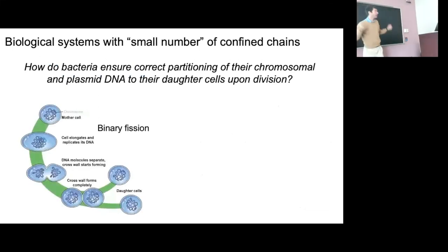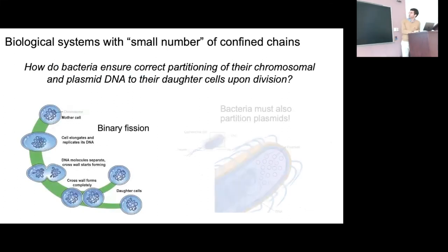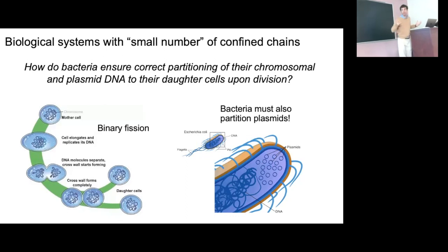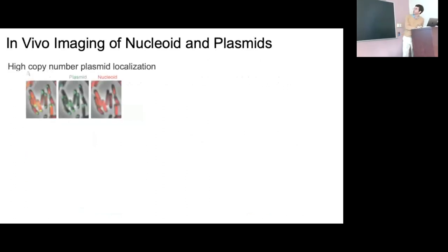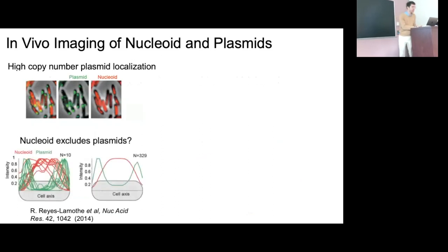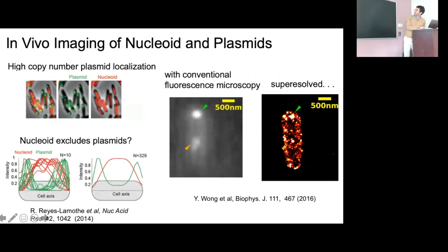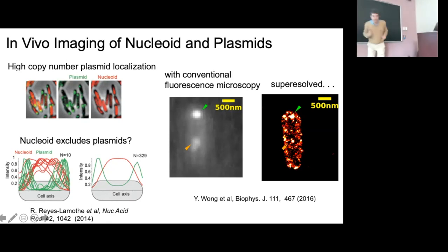For example, in bacteria the DNA needs to segregate to daughter cells — Suckjoon Jun proposed it might be partly due to entropic exclusion effects for large DNA. A more recent problem: bacteria also have plasmids — little circular pieces of DNA carrying important things like antibiotic resistance. High-copy-number plasmids don't have an active mechanism for segregation, so how do they segregate? Live cell imaging by colleague Reyes found plasmids like to segregate at the poles of the cell. Higher resolution imaging showed plasmids have a ring-like conformation around the nucleoid DNA.